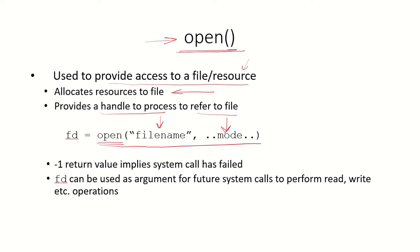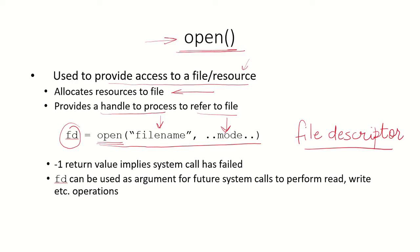When this system call is taken care of by the kernel, the kernel returns a handle which is a unique positive integer, also referred to as a file descriptor. You can check my earlier video on file descriptors for this. Now using this file descriptor the process can refer to the file. If this system call open fails, then a minus one return value is returned back to the process. This file descriptor can be used in future system calls by the process to perform read and write operations on the file.